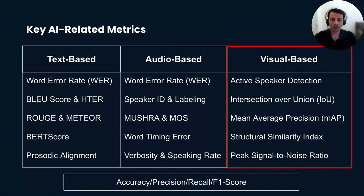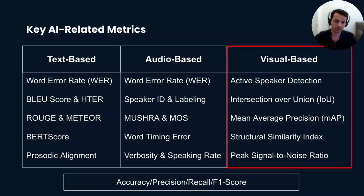For key metrics for visual-based products, we have active speaker detection, which measures the accuracy of detecting speakers on the scene for image or video manipulation. Intersection over Union (IOU) is used for object detection tasks, measuring the overlap between the predicted and ground-truth bounding box.